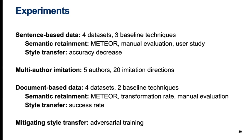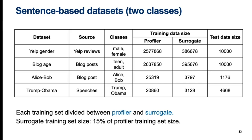We conducted multiple experiments across different types of data and tasks. In this presentation I'll specifically focus on our results from two-class sentence-based style transfer experiments. These experiments were conducted on four datasets and ParChoice was compared with three baselines. There were two larger datasets of around two and a half million training examples consisting of gender-labeled Yelp review sentences and age-labeled blog post sentences respectively. The two smaller datasets are labeled by author identity: Alice-Bob contains blog post sentences from only two authors, and Trump-Obama contains sentences from political speeches by the two most recent US presidents.